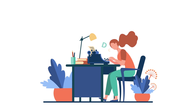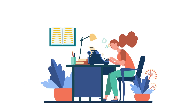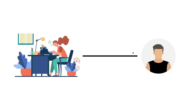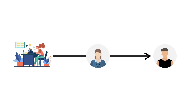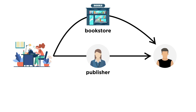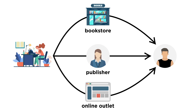For example, if an author writes a book, they might have a difficult time finding a way to distribute the book in a way that makes it easy for consumers to buy it. This is where a dealer comes in, whether in the form of a publisher, a bookstore, or an online outlet.